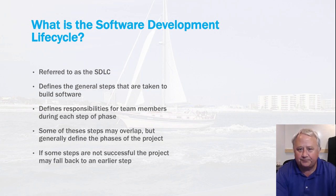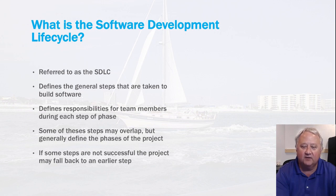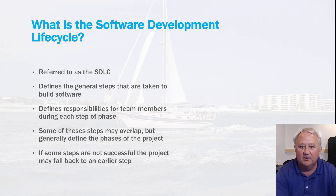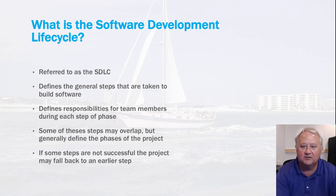For example, software may be undergoing testing and they may find some bugs, and it'll roll back to a previous state of development until that bug is fixed. This may bounce back and forth between that particular step. And if some steps are not successful, the project may roll back to a previous step. But these are generally the steps that are defined for the SDLC.